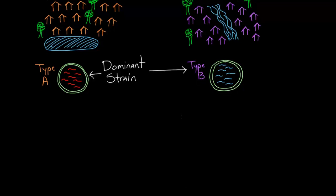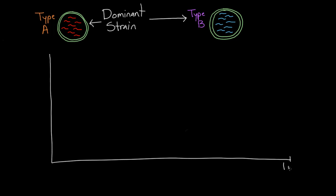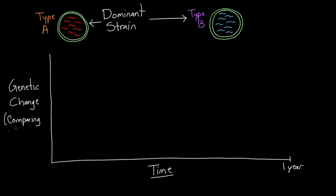Over the course of the next year — the next 12 months — you're going to follow these two communities and track what's happening with the dominant strain. You want to know how genetically different it becomes compared to what it was like on day one of your job. So when we say genetic change, we're comparing it to the initial strain.